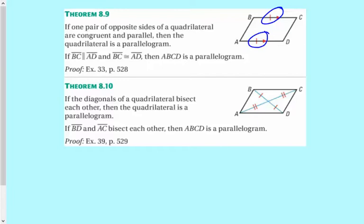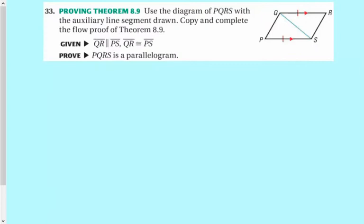The other one is that the diagonals of quadrilateral bisect each other, then the quadrilateral is a parallelogram. We talked about this one yesterday. If it's a parallelogram, it has that property. But this is kind of the converse of it. I'm going to skip this theorem. I'm going to do this theorem for you guys in class, number 33, just because the video's getting a little bit on.